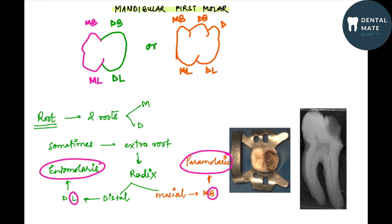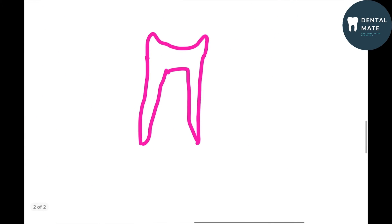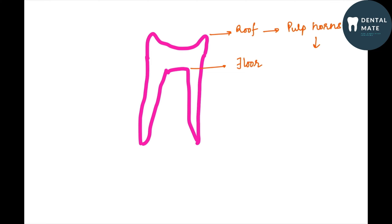Now if we draw the pulp chamber of a mandibular first molar, we can see it has four pulp horns. Here is the roof and this is the floor. The roof contains pulp horns — the pulp horns in mandibular first molar are four: mesiobuccal, mesiolingual, distobuccal, and distolingual.